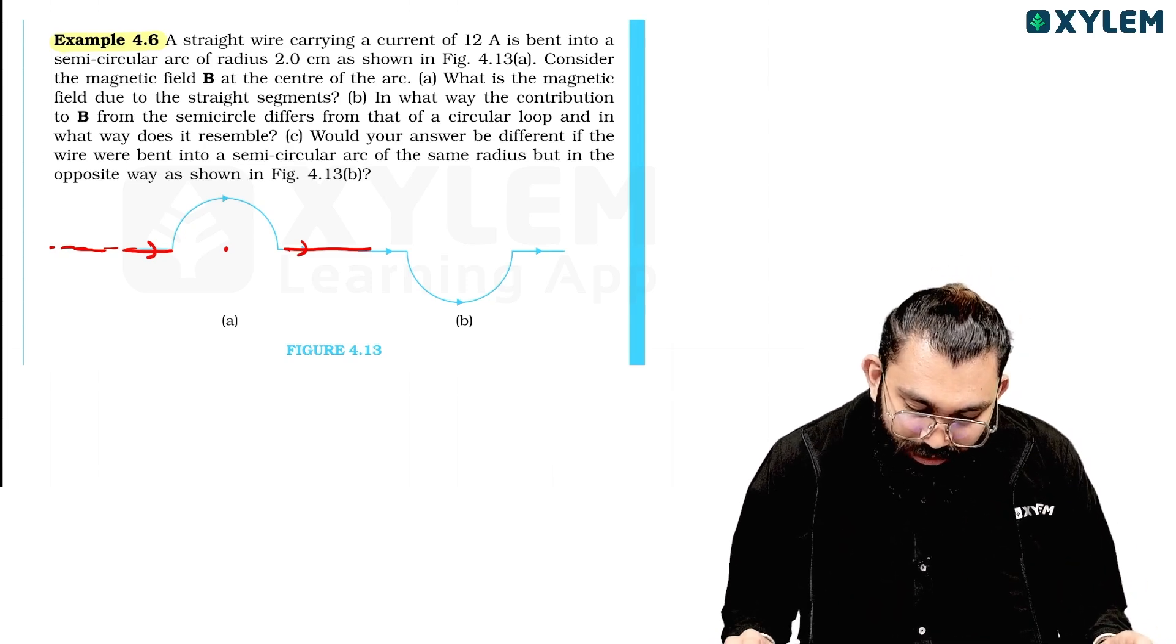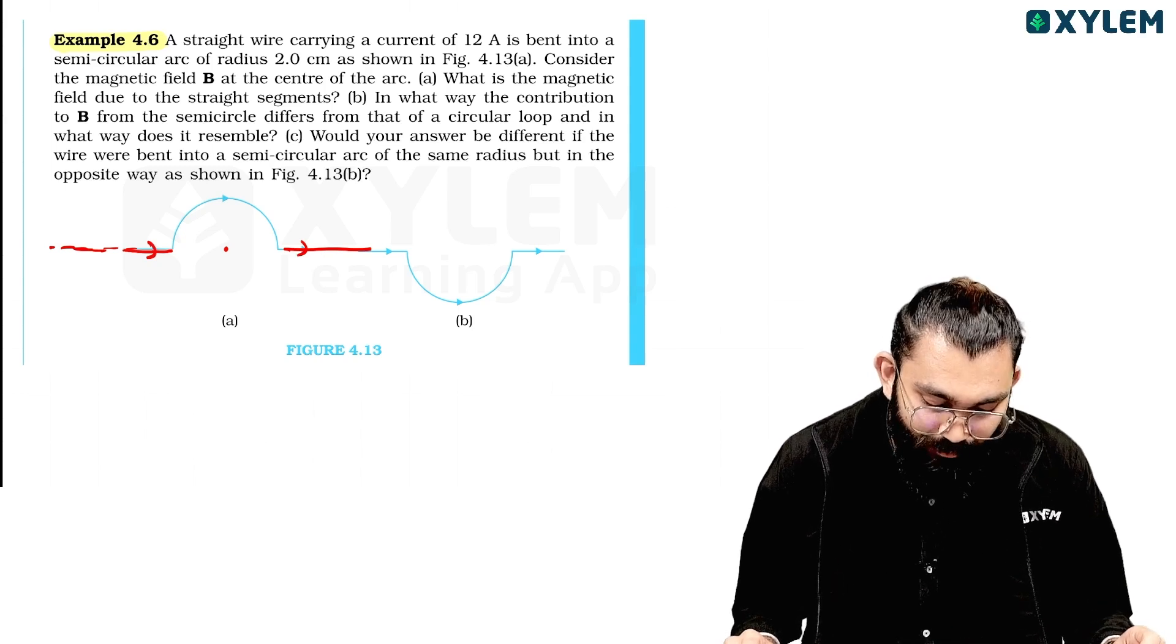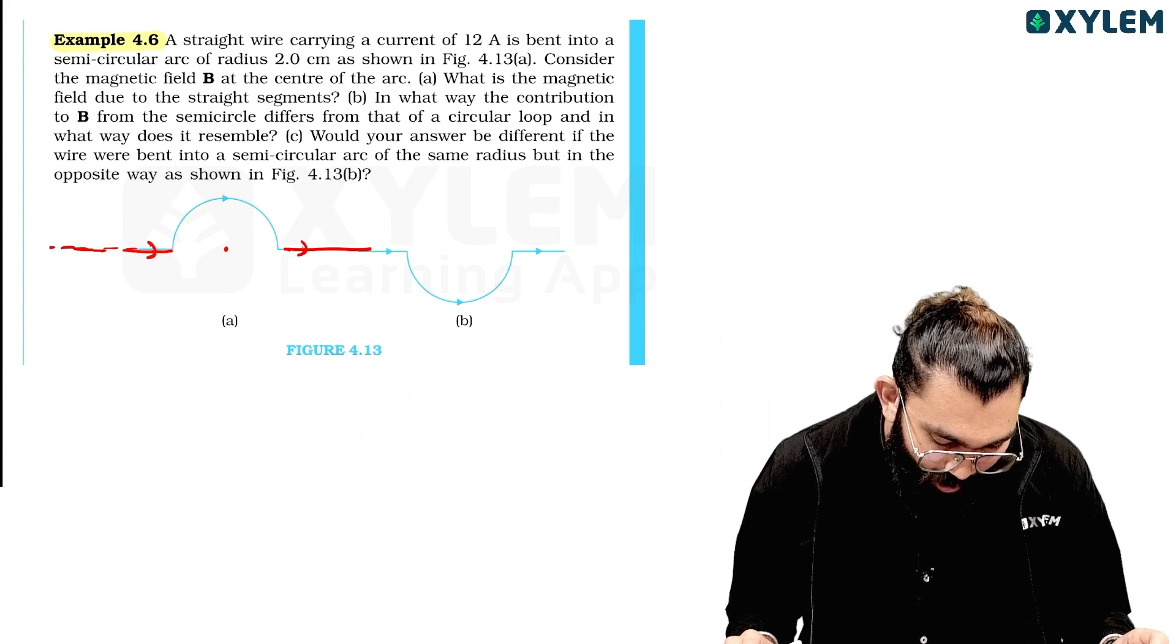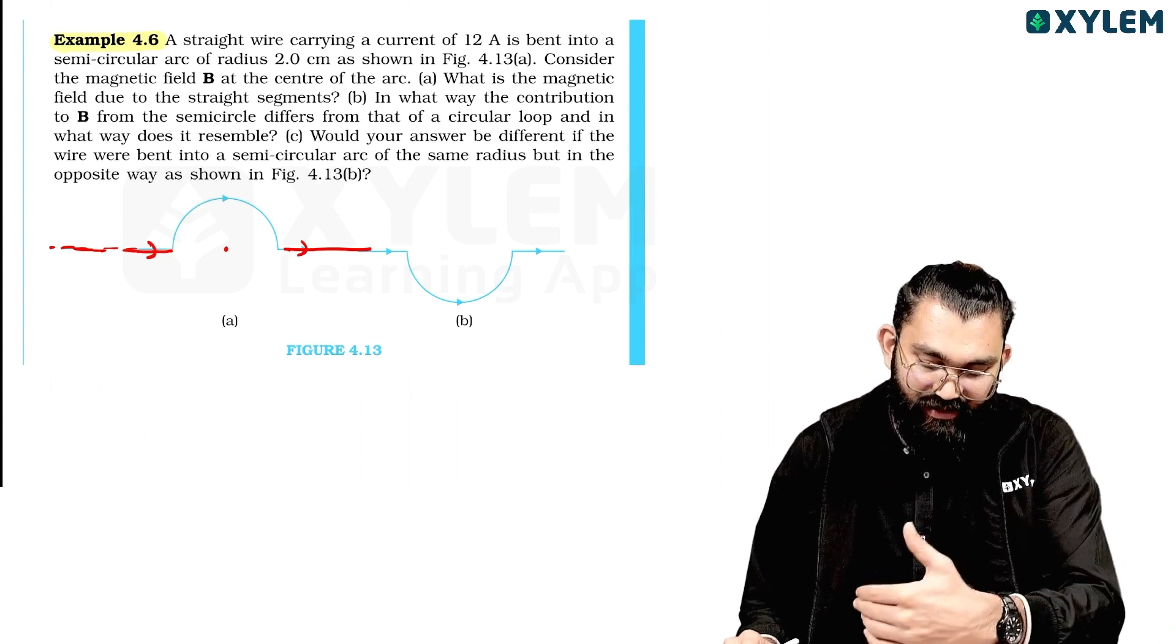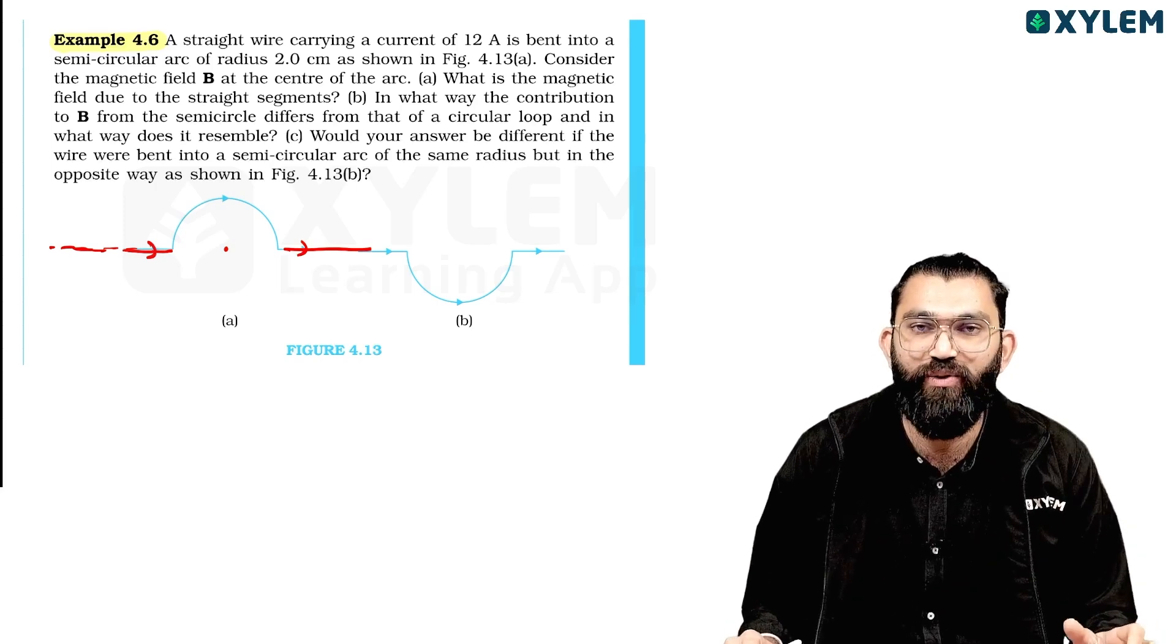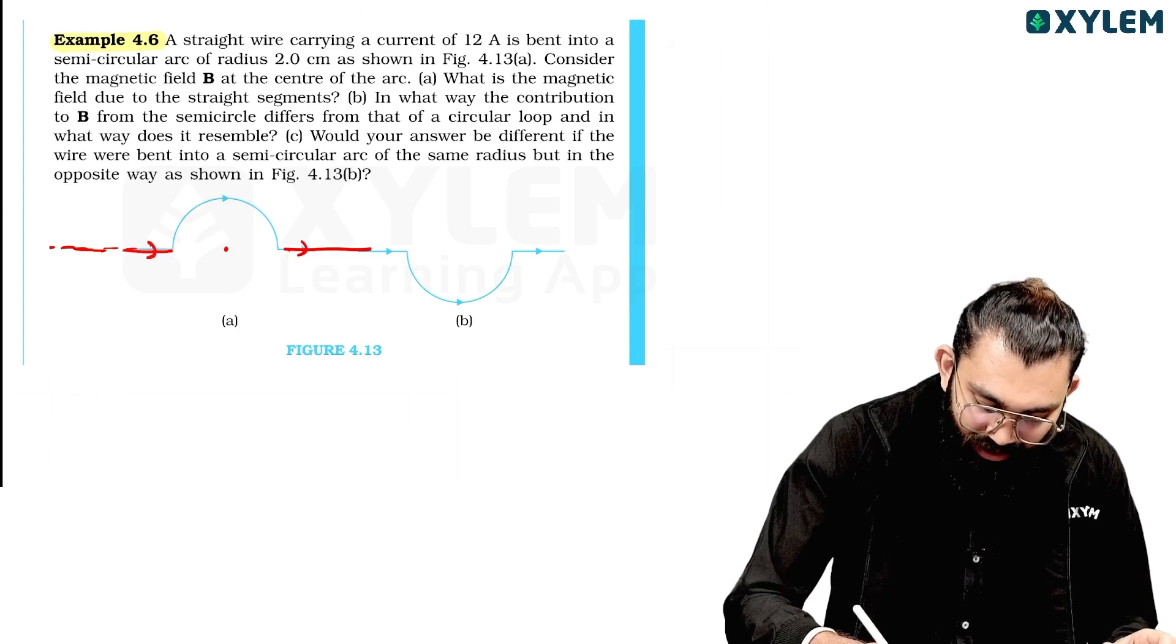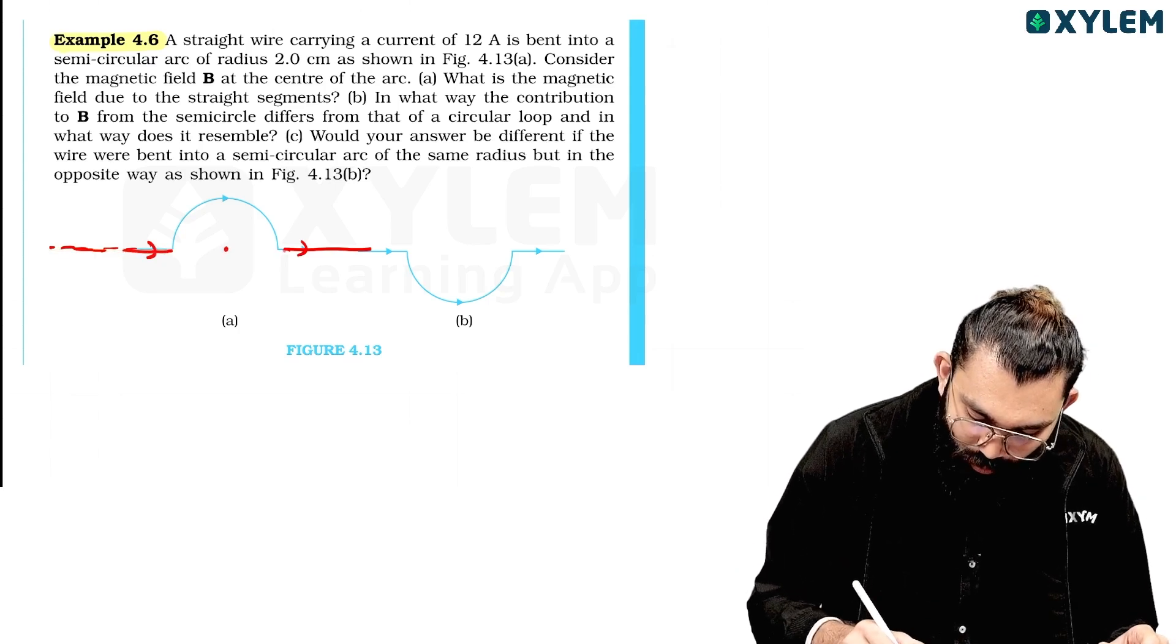In what way is the contribution to B from the semi-circle different from that of the circular loop? And in what way does it resemble? That is the difference between these two diagrams. This is the NCERT question. In this solved example, we have to get the information.